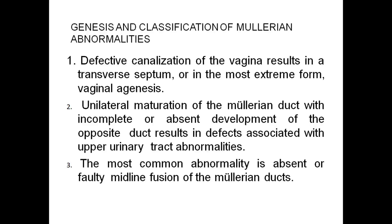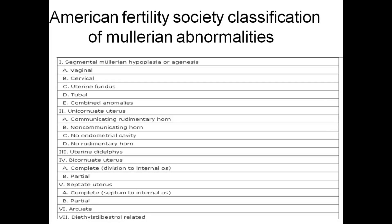Classification of Mullerian abnormality: defective canalization of the vagina results in a transverse septum or, in the most extreme form, vaginal agenesis. Unilateral maturation of the Mullerian duct with incomplete or absent development of the opposite duct results in defects associated with upper urinary tract abnormalities. The most common abnormality is absent or faulty midline fusion of the Mullerian ducts. The American Fertility Society classification of Mullerian abnormalities divides them into: segmental Mullerian hypoplasia, unicornuate uterus, uterine didelphys, bicornuate uterus, septate uterus, and diethylstilbestrol-related anomalies.